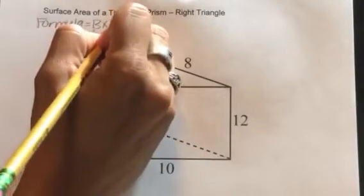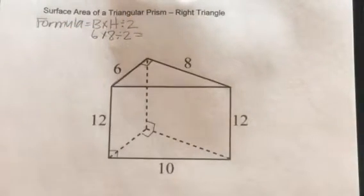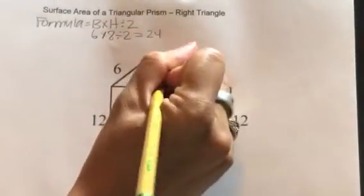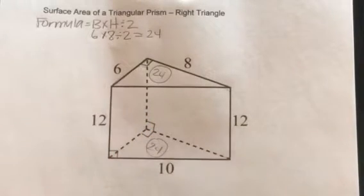So I'm going to do six times eight, and then I have to divide it by two. And six times eight divided by two is 24. So I know the top now is 24, and I know that the bottom now is also 24.